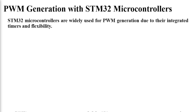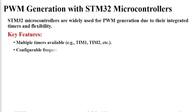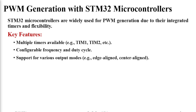Let us understand how the STM32 microcontroller generates PWM signals. STM32 microcontrollers are used because of their ability to integrate timers and the flexibility to program them to generate very precise PWM signals. Key features include multiple timers, which allow generating multiple PWM signals with different duty cycles and different frequencies. We can also configure PWM signals in different output modes, for example, edge-aligned PWM or center-aligned PWM signals.